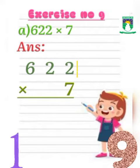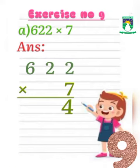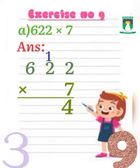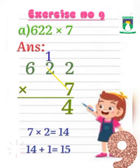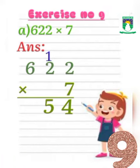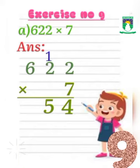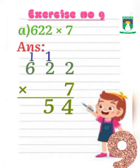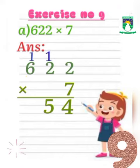7 times 2 equals 14. Write 4 under 2 and take 1 as carry. Next, 7 times 2 equals 14. Add 1 of carry, it will become 15. Write 5 of 15 under the second column and take 1 as carry above 6.